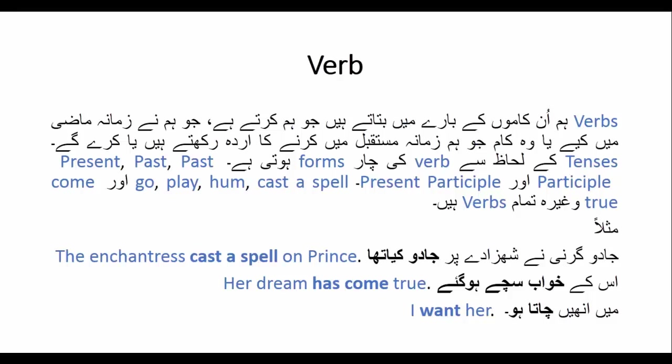State verbs کی مثال: want، love، like — یہ تمام state verbs ہیں جو فیلنگز کو ظاہر کرنے کے لیے استعمال ہوتے ہیں۔ Verb کا یہ موضوع بہت بڑا ہے — اس کے course میں بھی یہ سب بتایا گیا ہے اور اس چینل کے ذریعے بھی مزید پڑھایا جائے گا۔